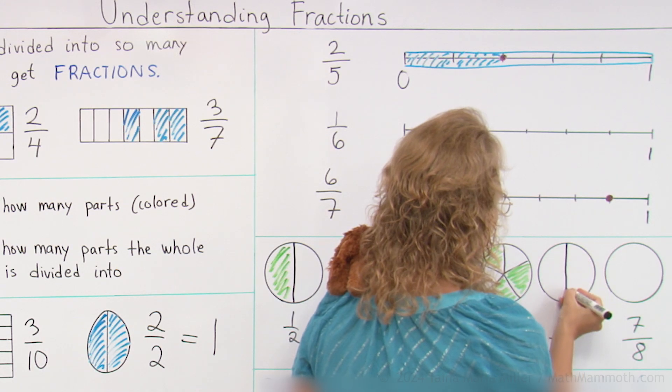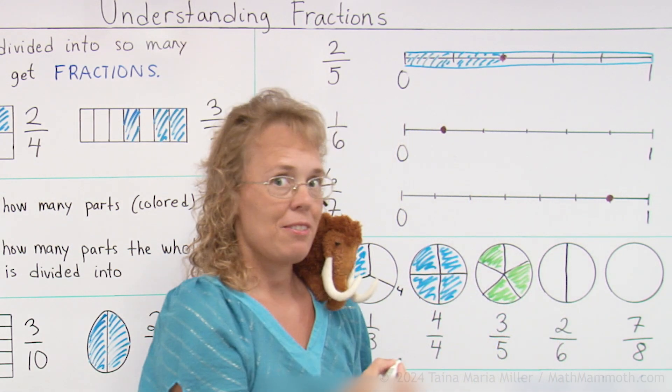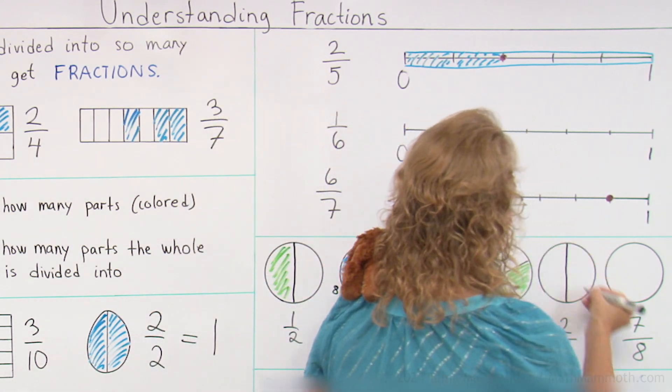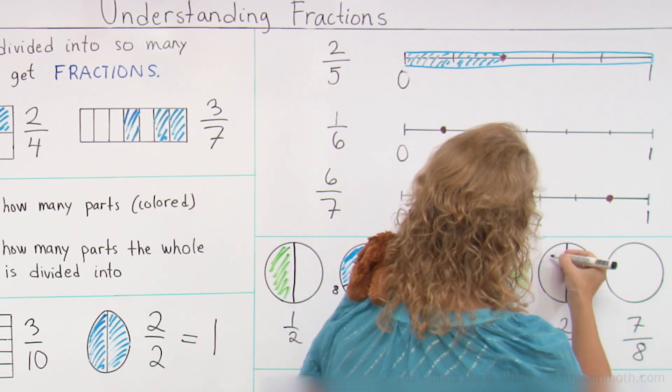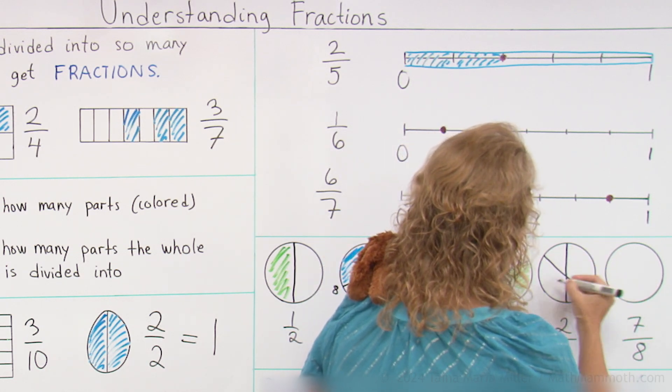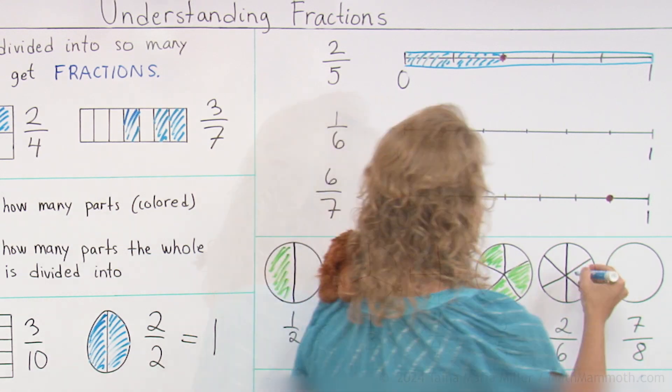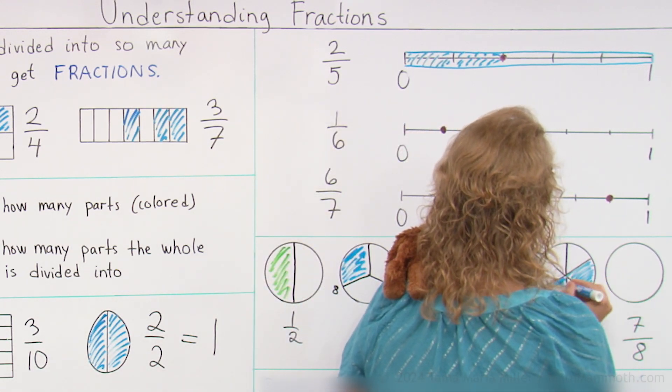For sixths, first divide it in half. And then we go kind of like X over here. Try to go through the center point like that. And color two.